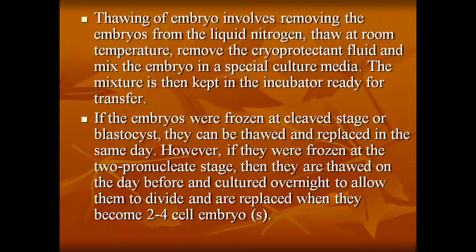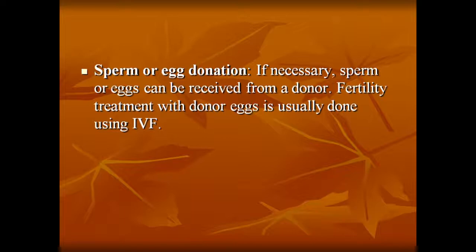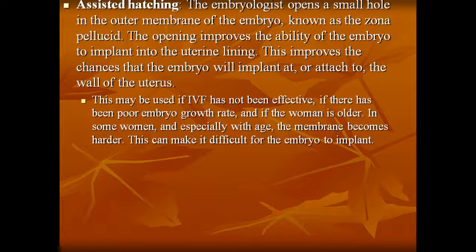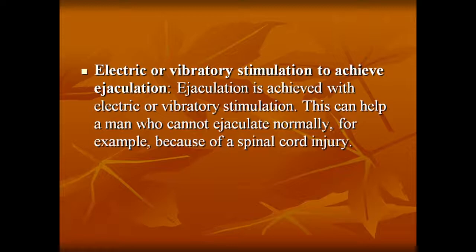Sperm or egg donation: if necessary, sperm or eggs can be received from a donor. Fertility treatment with donors is done similarly with IVF. Assisted hatching: the embryologist opens a small hole in the outer membrane of the embryo, known as the zona pellucida, which improves the ability of the embryo to implant in the uterine lining. This may be used if IVF has not been effective, if there has been poor embryo growth rate, or if the woman is older — in some women the membrane becomes harder with age, making it difficult for the embryo to implant. Ejaculation may be achieved with electric or vibratory stimulation, helping men who cannot ejaculate normally, for example due to spinal cord injury.